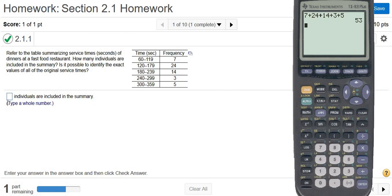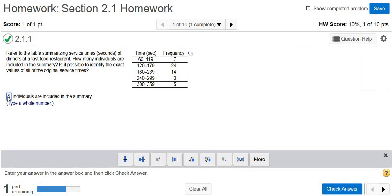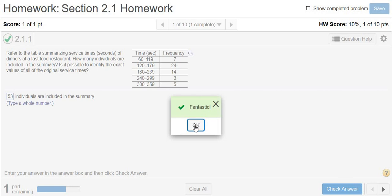Let's try it. So 53. So 53 individuals are included. Let's type that in. 53. Good stuff.